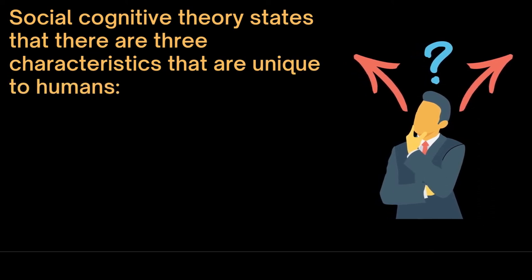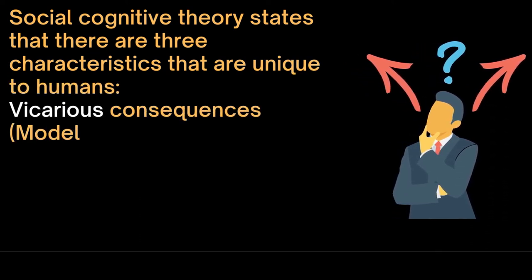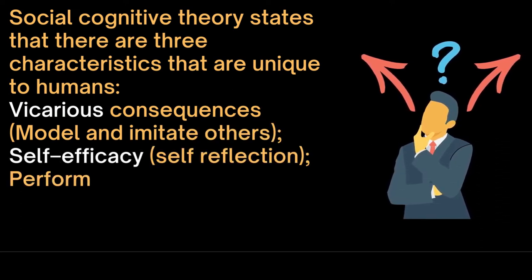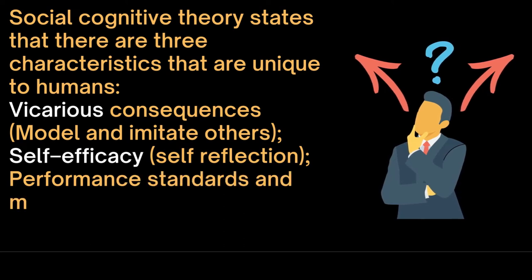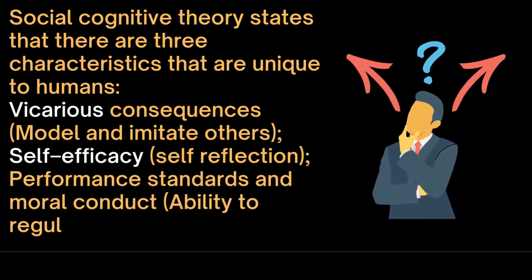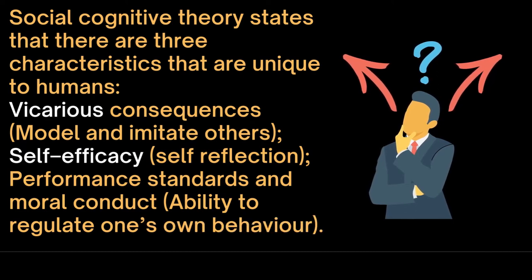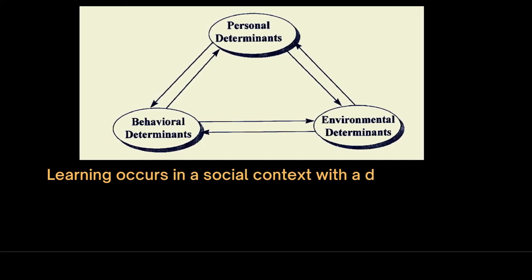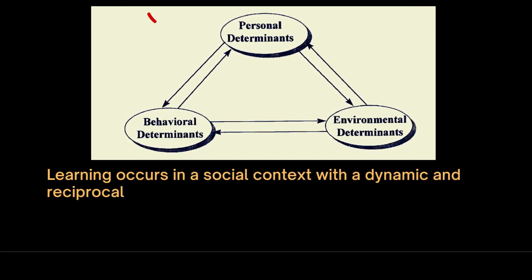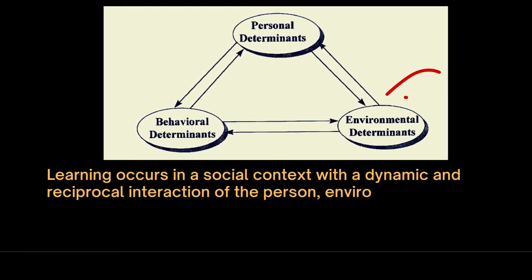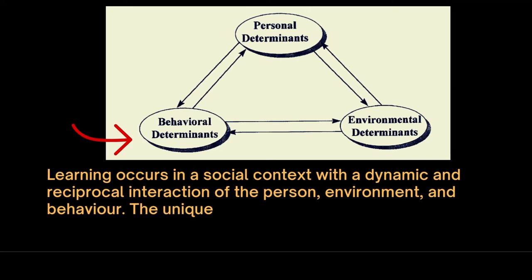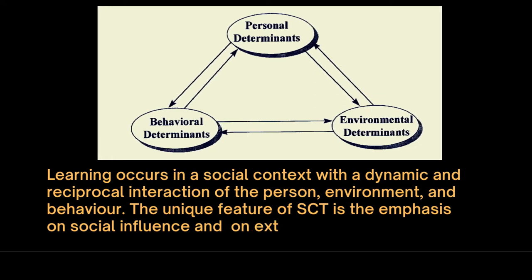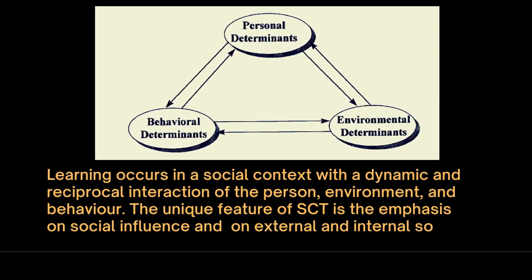Social cognitive theory states that there are three characteristics unique to humans: firstly, vicarious consequences — humans can model and imitate others; secondly, self-efficacy; and thirdly, self-reflection on performance standards and moral conduct. Humans have the ability to regulate their own behavior. Learning occurs in a social context with a dynamic and reciprocal interaction of person, environment, and behavior.